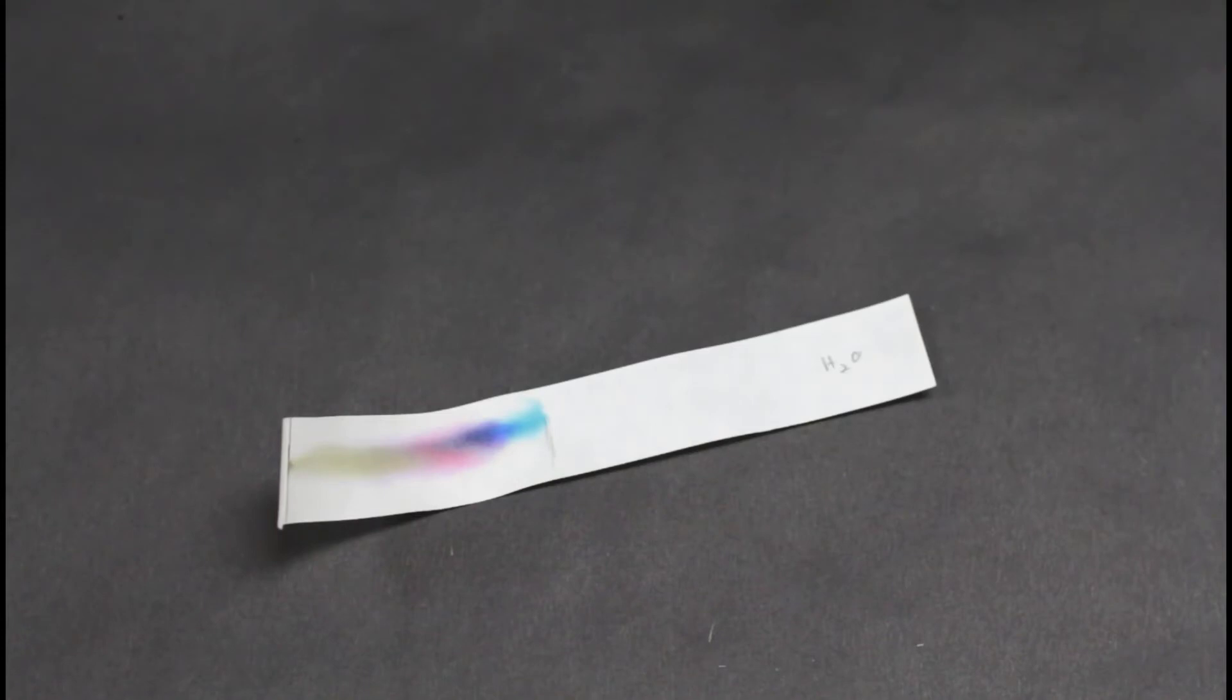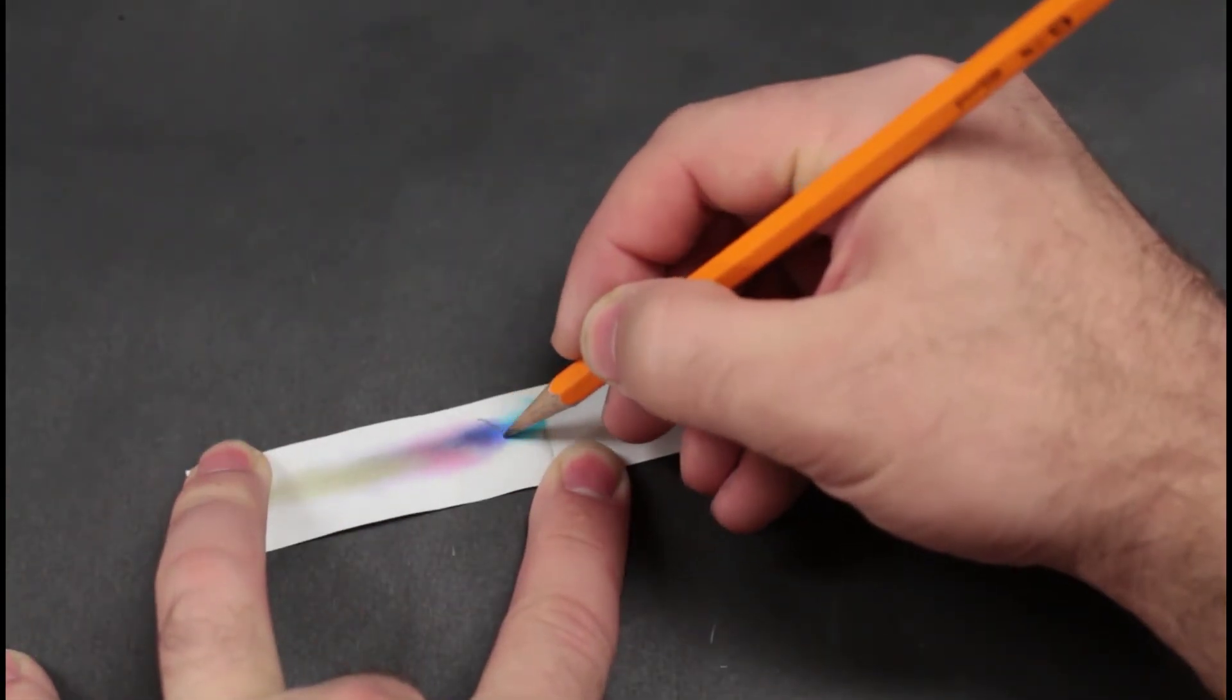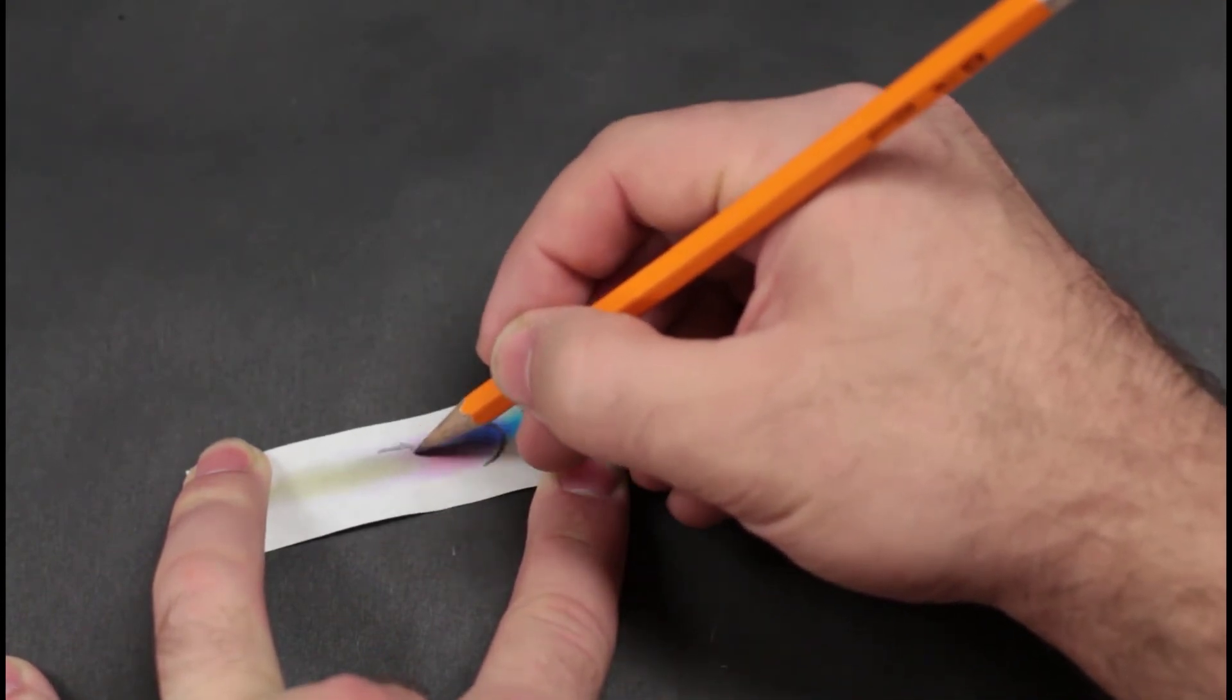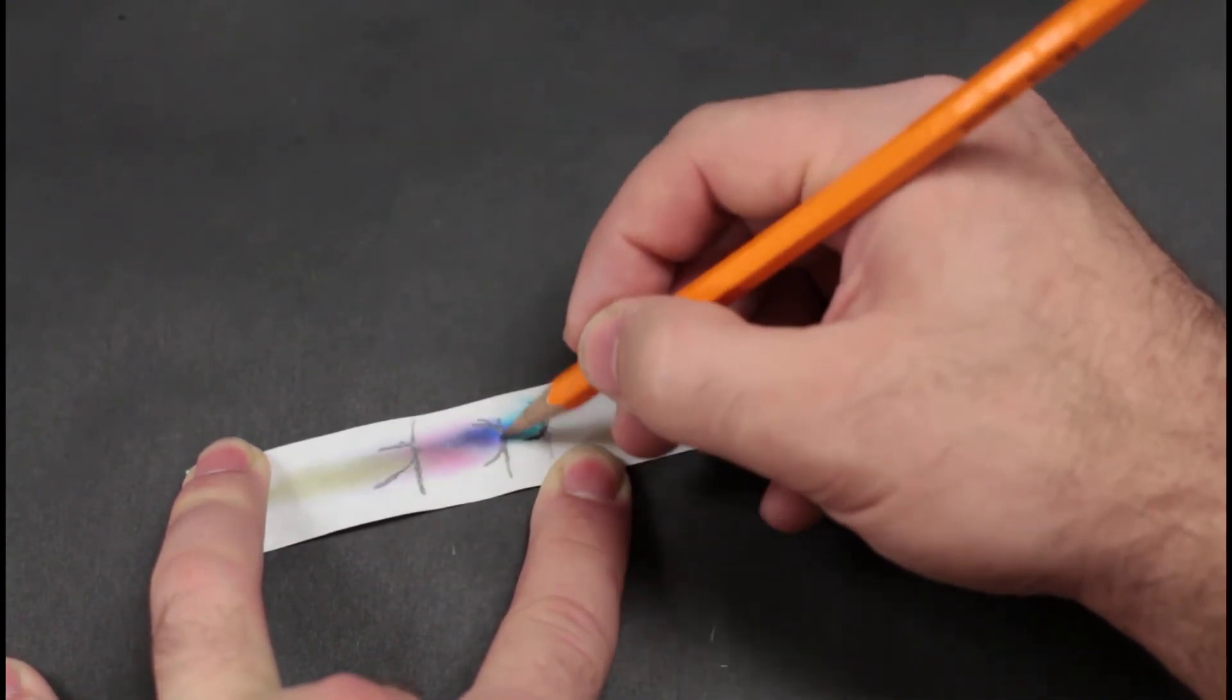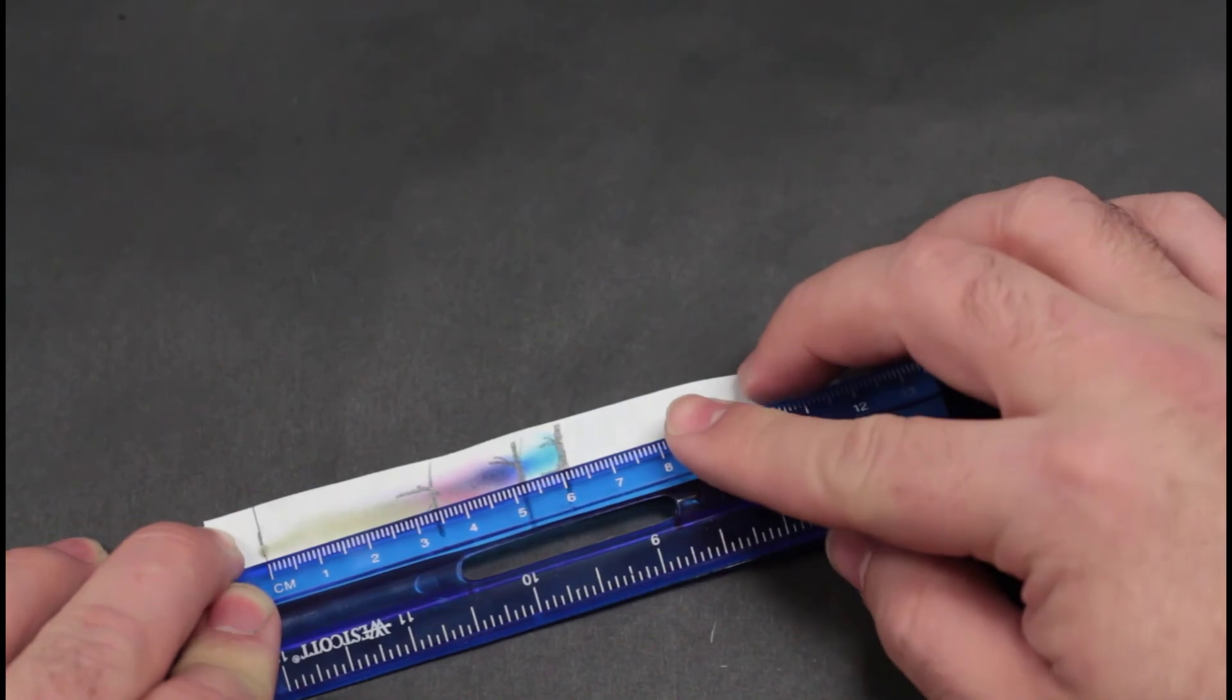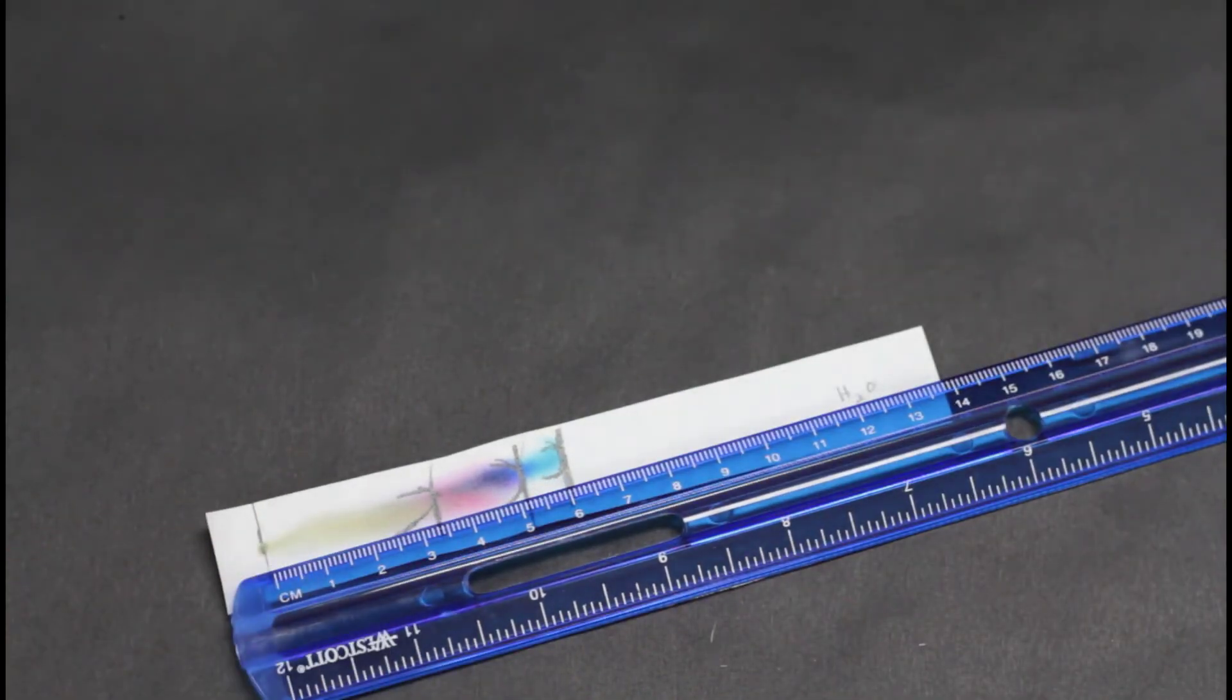To measure the RF value, we will make a ratio of how far each pigment traveled divided by how far the solvent traveled. That'll make more sense when we go over the calculations. In my example, notice that the blue pigment traveled 6 centimeters, the red pigment traveled 5.2 centimeters, and the yellow pigment traveled 3.4 centimeters. Let's determine our RF values for those colors.